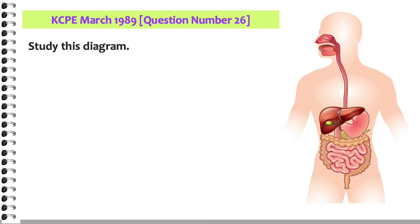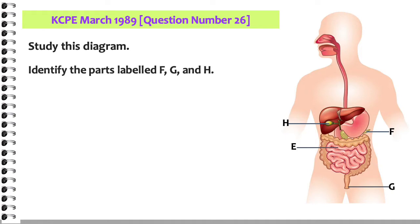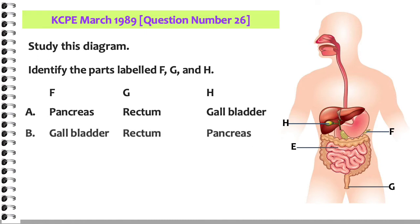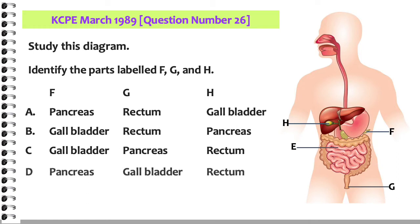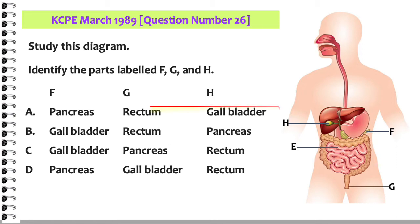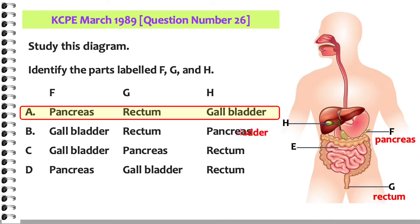Study this diagram. Identify the parts labeled F, G, and H. Which label points to the gallbladder? Which label points to the pancreas? Which label points to the rectum? The part labeled F is the pancreas. The part labeled G is the rectum. The part labeled H is the gallbladder.